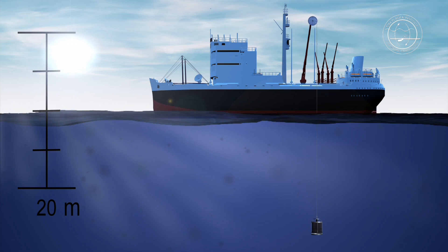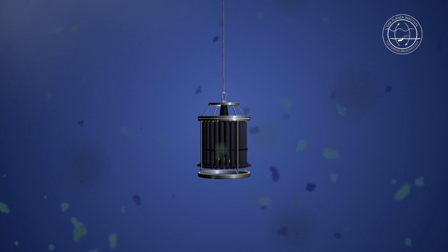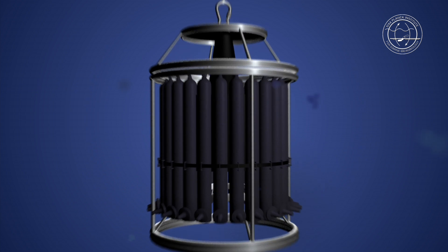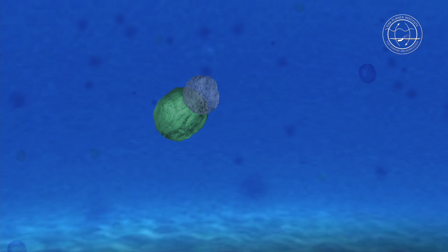As the water is so clear, sunlight can penetrate to great depths. Tiny algae that need sunlight to produce energy can still survive at 200 meters below the sea's surface. We take water samples to investigate how they can survive on so little nutrients.